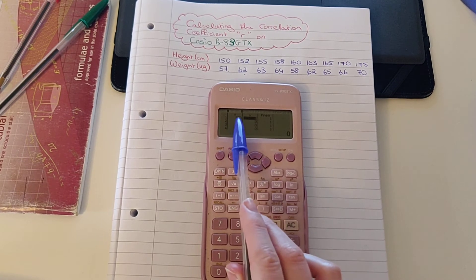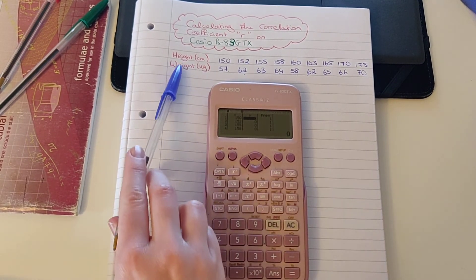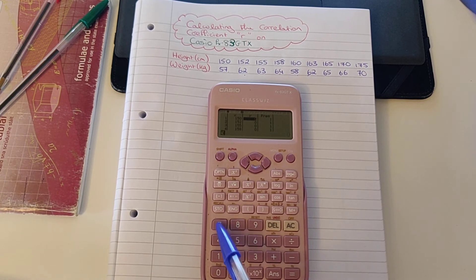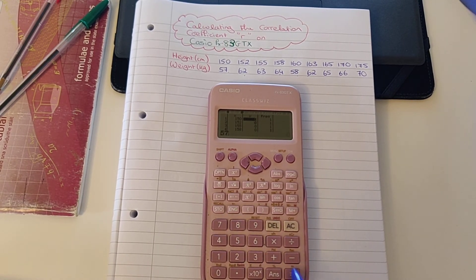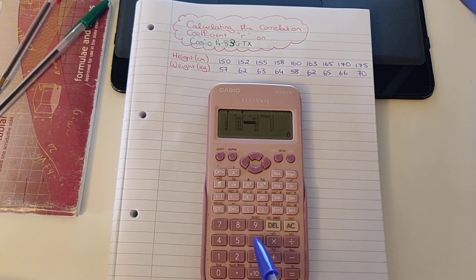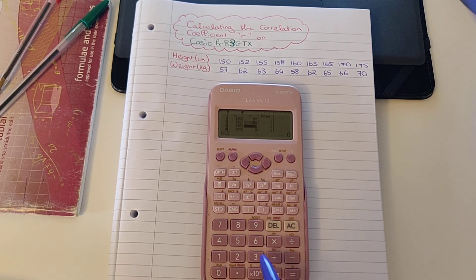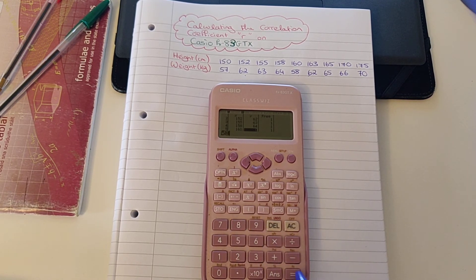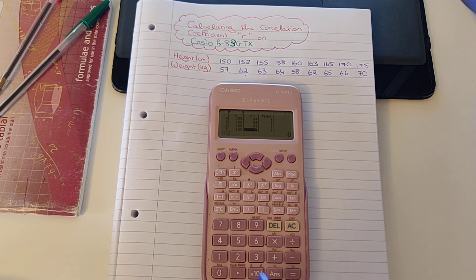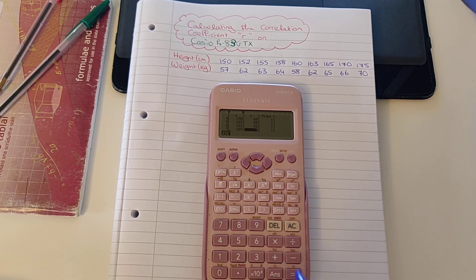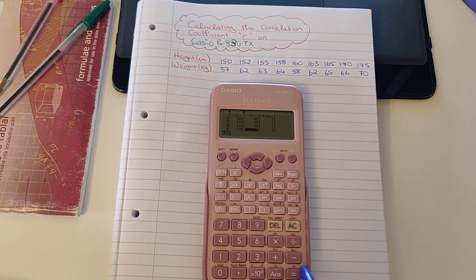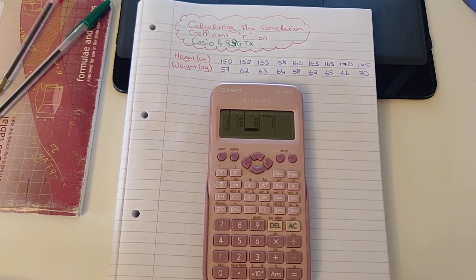So now that I'm matching one, which is 150, I'm going to start typing in my weights. The first one being 57. So we press 57 and equals to move to the next row. Then 62, 63, 64, 58, 62, 65, 66, 70, and 65, pressing equals after each. And I can see now I have nine values in both columns.